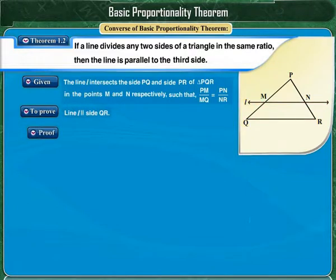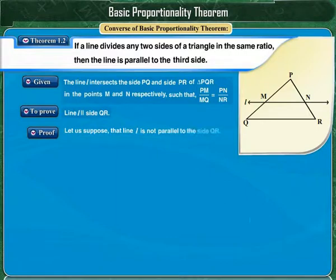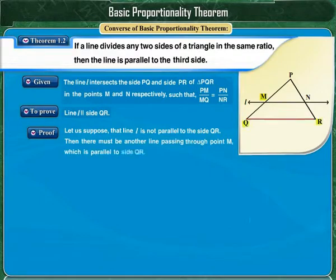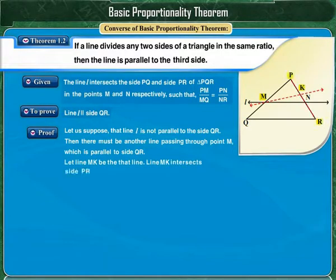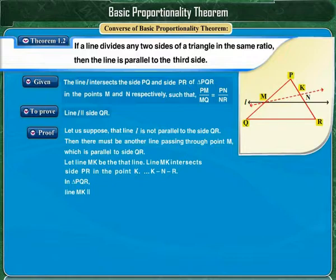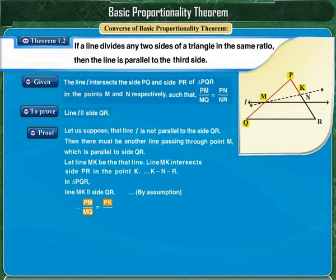To prove this converse, we will use the indirect method. Let us suppose that line L is not parallel to side QR. Then there must be another line passing through point M which is parallel to side QR. Let line MK be that line, which intersects side PR at point K such that point N lies between points K and R. In triangle PQR, line MK is parallel to side QR. Therefore, by the basic proportionality theorem, PM upon MQ is equal to PK upon KR.